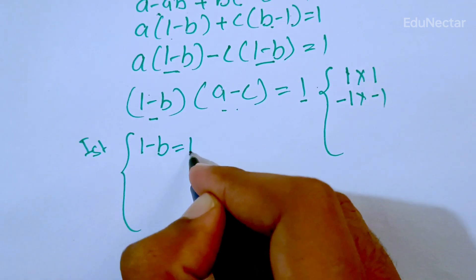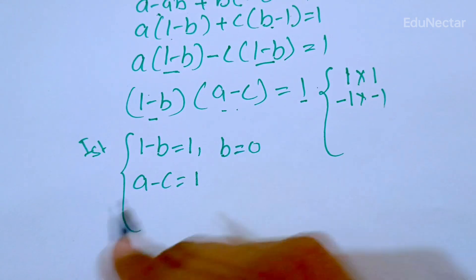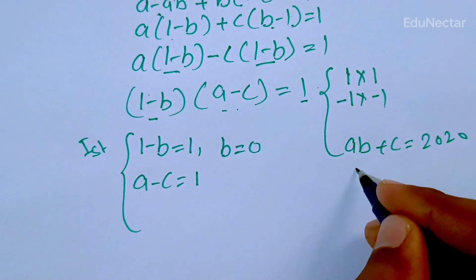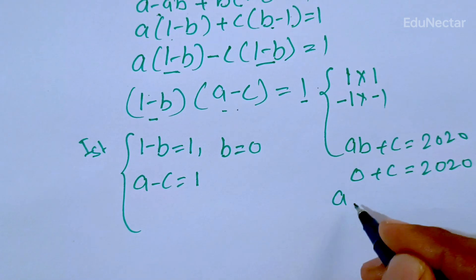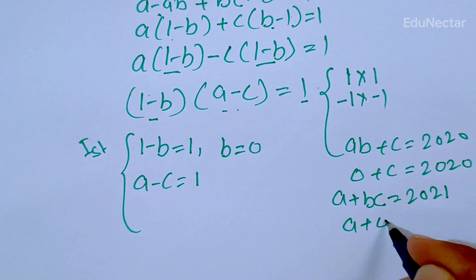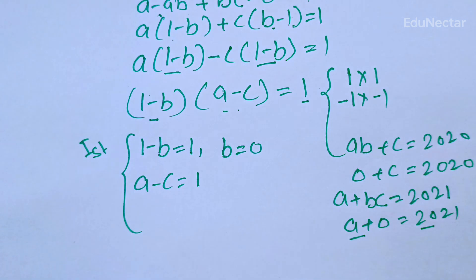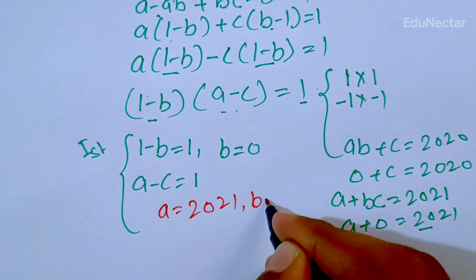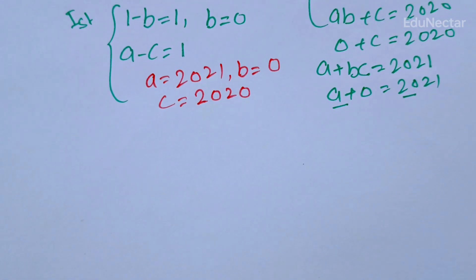First case: (1 minus b) equals one, so b is equal to zero. And (a minus c) equals one. I put b equals zero into equation one: ab plus c equals 2020, which gives c equals 2020. In equation two: a plus bc equals 2021, which gives a plus zero equals 2021, so a equals 2021. From the first case: a equals 2021, b equals 0, and c equals 2020.